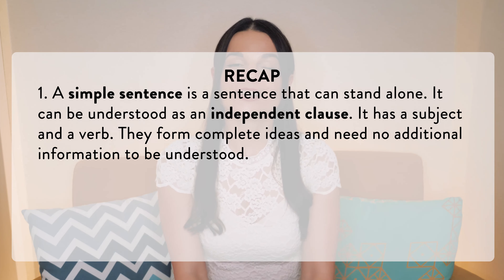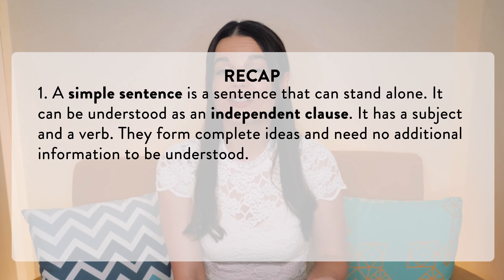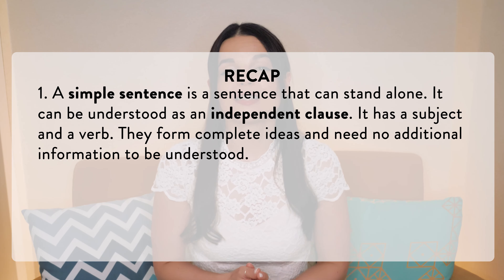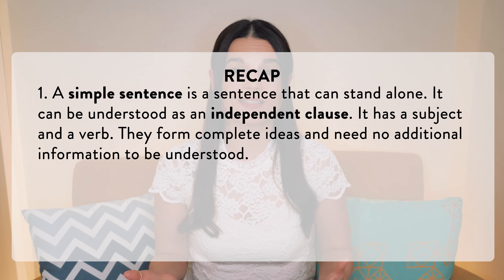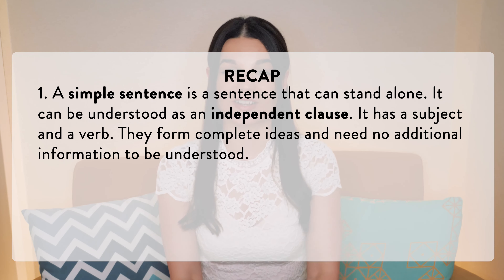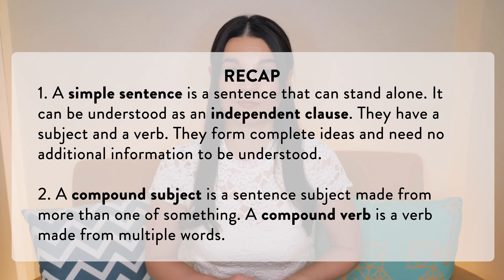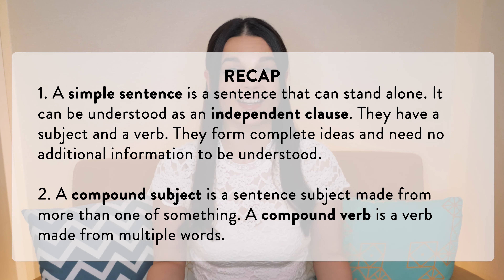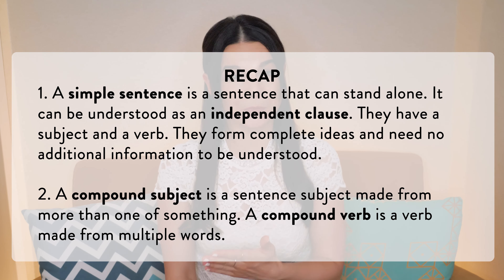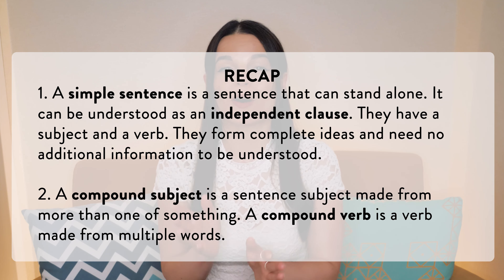Let's recap the key points from this video. First, a simple sentence is a sentence that can stand alone — it can be understood as an independent clause. These are sentences with a subject and a verb that form complete ideas and need no additional information to be understood. Second, a compound subject is a sentence subject made from more than one of something, like more than one person or more than one animal or item. A compound verb is made from multiple words — two verbs that come one after the other. In the second episode of this series, we'll build on the knowledge from this video and look at how we combine simple sentences or independent clauses with other simple sentences, as well as how to punctuate them correctly.